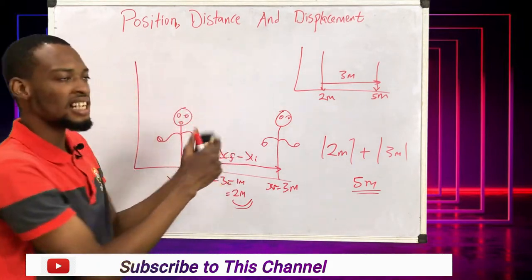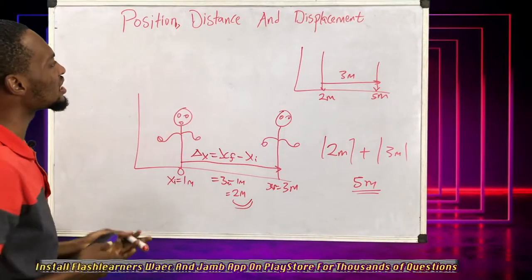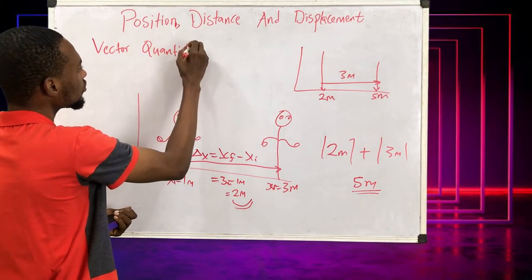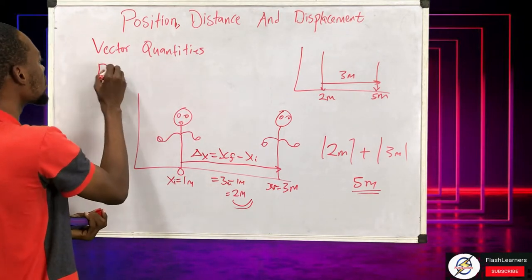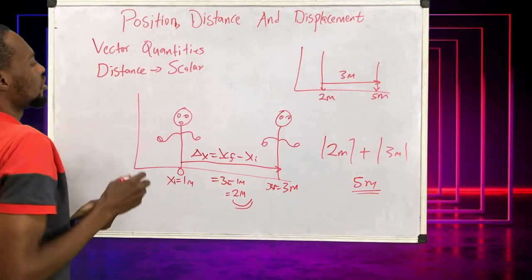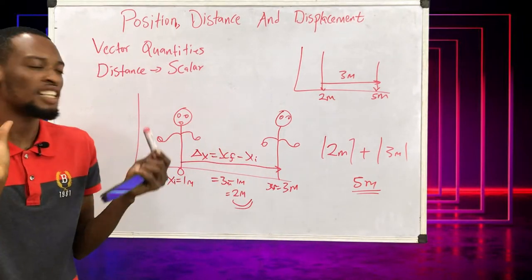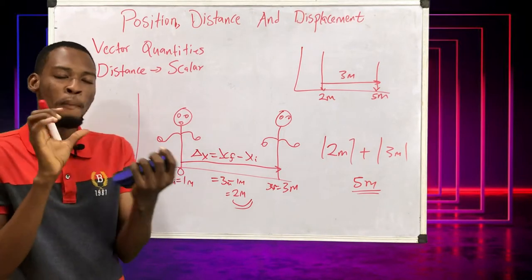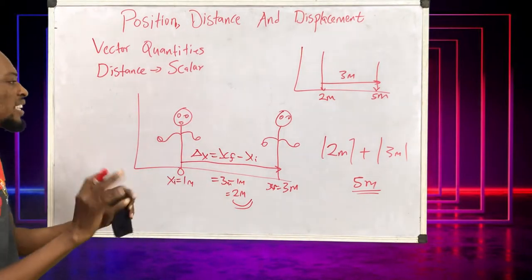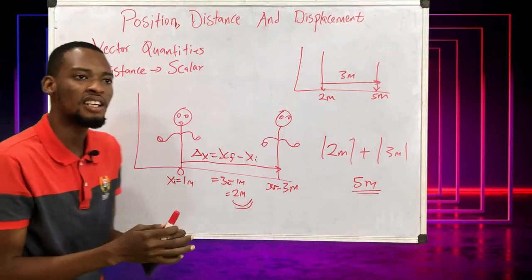So distance is different from position and displacement in the sense that distance is talking about the total ground covered. Position and displacement are vector quantities, while distance is a scalar quantity. As a scalar, only the size — the magnitude — matters in distance.